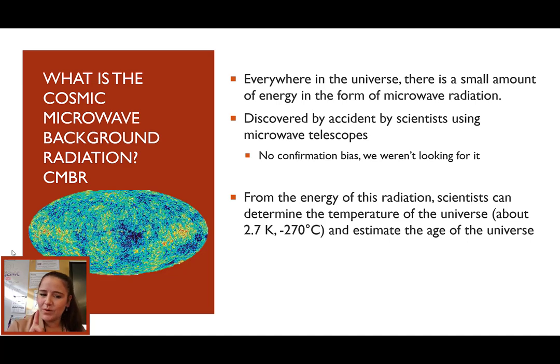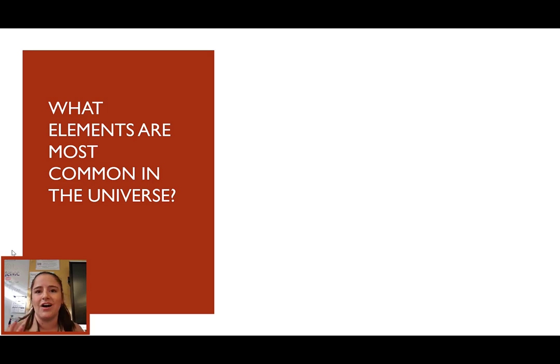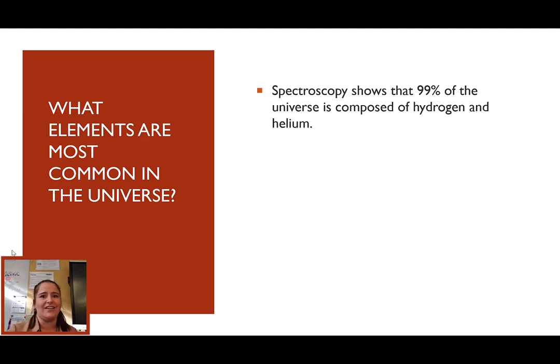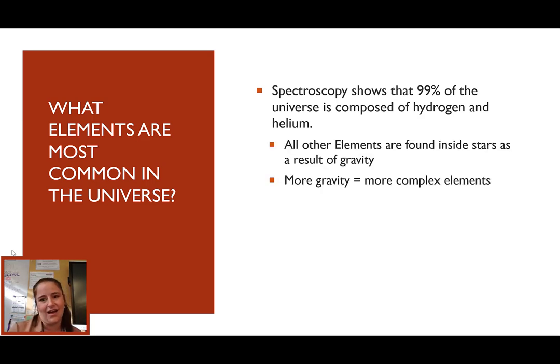Now, there's one more piece of evidence for the Big Bang theory. That is the elements that are most common in the universe. Using spectroscopy, we figured out that 99% of the universe is just hydrogen and helium. Now, these are the two most simplest elements on the periodic table. All other elements have to be created inside stars as a result of gravity working and fusing these elements together. When you have more gravity, you can get more complex elements.